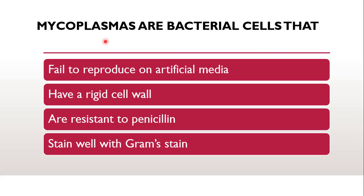Now, mycoplasmas are the separate characteristic bacterial cells. As you have seen the bacterial cell structure, it contains the outermost cell wall, then cell membrane, then cell organelles. But mycoplasmas are the bacterial cells that have which of these features? Either they have a rigid cell wall, they fail to reproduce on artificial media, they are resistant to penicillin, or stain well with gram stain.